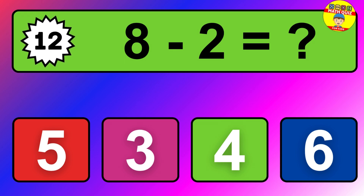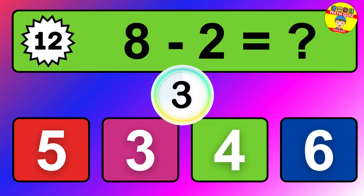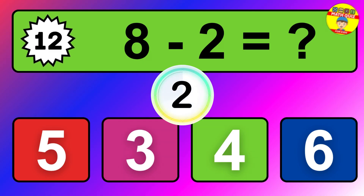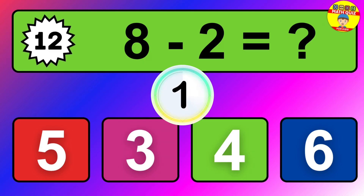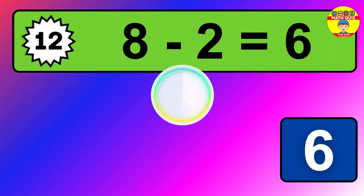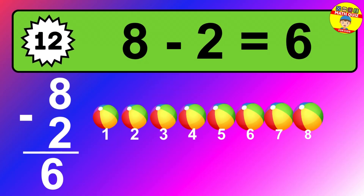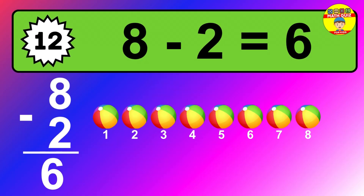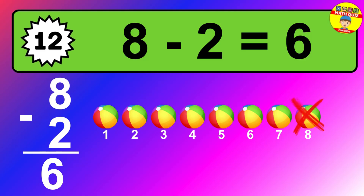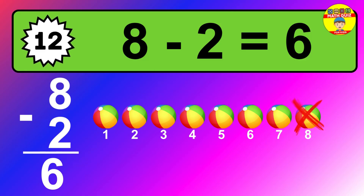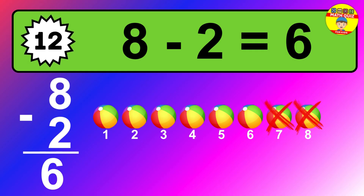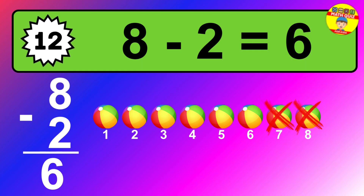Question 12. 8 minus 2 equals what? So the answer is 8 minus 2 is 6. Let's count it. 1, 2, 3, 4, 5, 6.